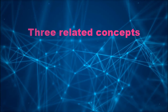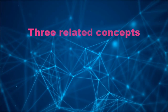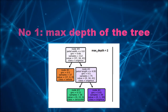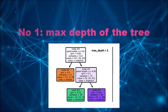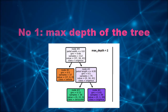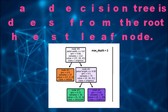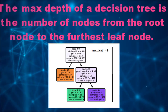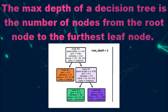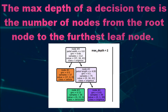Before we proceed further, we should discuss three main concepts used in this tutorial. The first concept is max depth. Max depth is the maximum depth of the tree. Theoretically, the maximum depth of a decision tree can be one less than the number of training samples. The max depth parameter can take integer values and its default value is none.